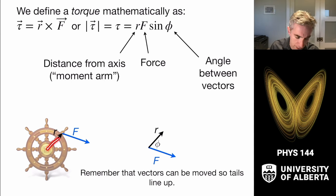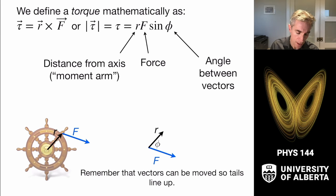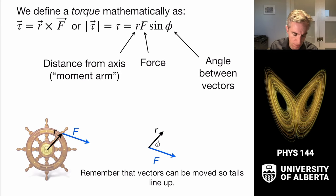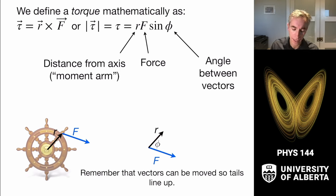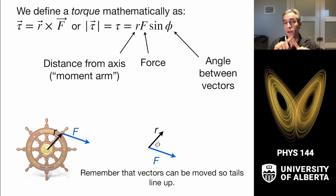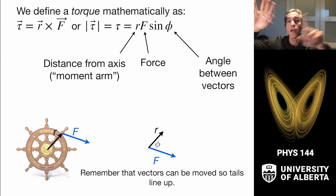For a pirate wheel example: R comes out as the moment arm. To calculate the angle between the moment arm and the force F, slide the force vector down so it is tail to tail with R — that's the angle we calculate. The force and the moment arm have a tip-to-tail relationship in the diagram, but put those tails together to find the angle between them.